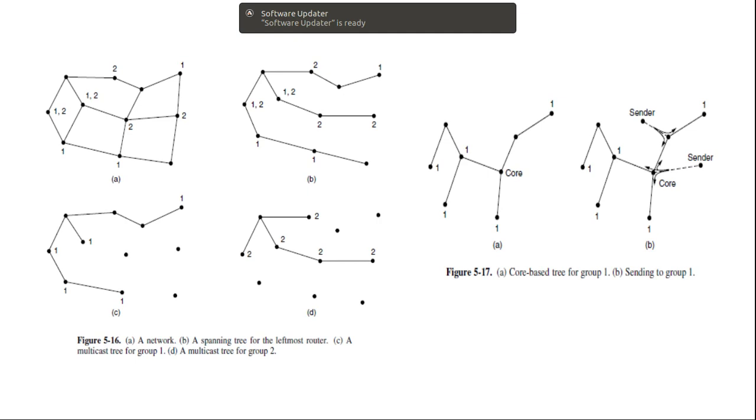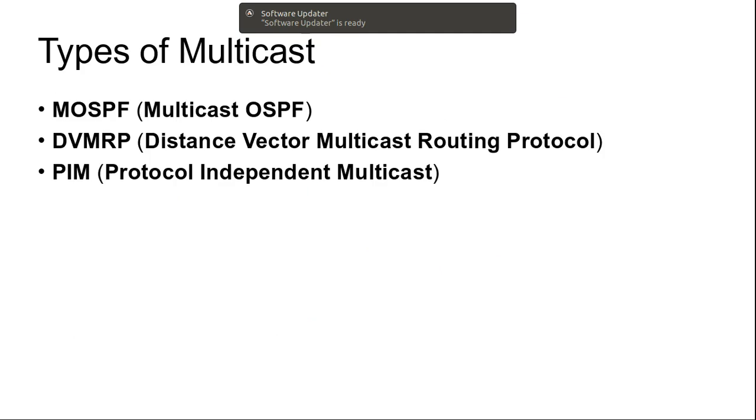MOSPF, multicast OSPF, is an example of a link state protocol that works in this way.